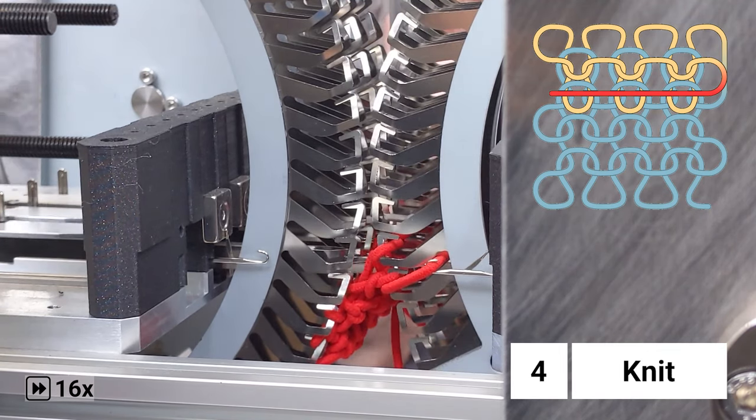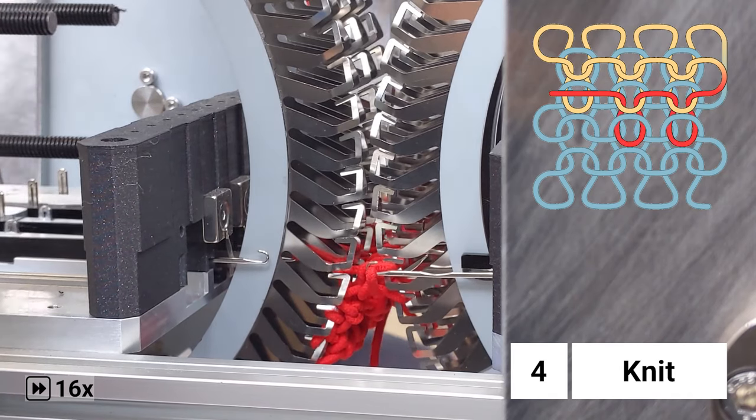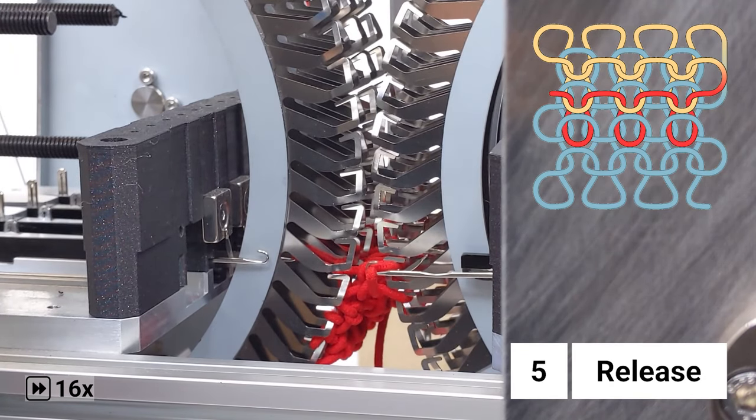Step 4: Knit. The left needles pull the red yarn through the loops to create a new row of loops. Step 5: Release. The yarn is released from the retaining needles.